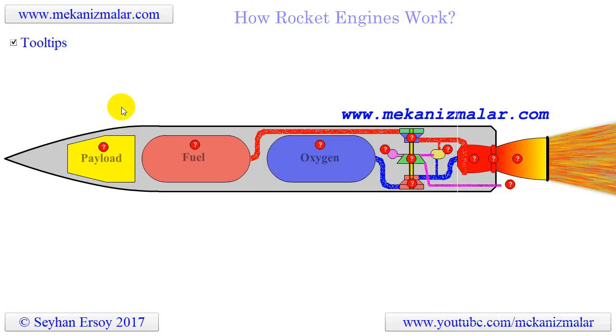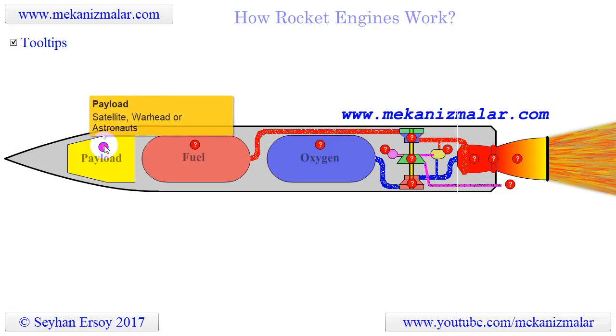A rocket has four main parts. The first part is the payload. The payload can be anything from a satellite, a warhead, to even a human being for space exploration.